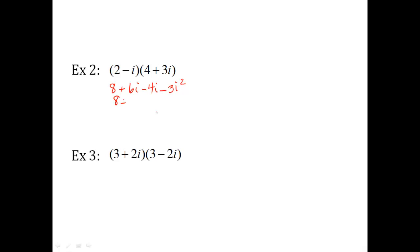So let's simplify this. Six i minus four i is two i's. And remember what i squared is: negative three times a negative one. That's what i squared is. So eight plus two i, this becomes a plus three. So my final answer is eleven plus two i.